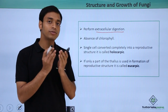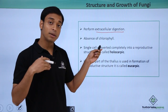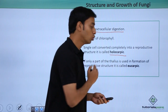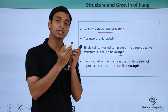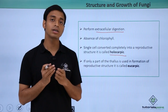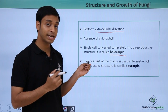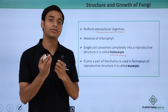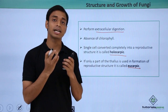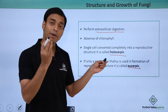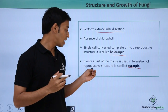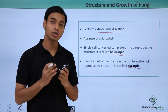If the entire body of a single-cell fungus gets converted into a reproductive structure, it is termed holocarpic. However, if only a part of the fungus is converted into a reproductive structure, that part is known as the eukarpic type — meaning a small part of the thallus or body of the fungus is converted into a reproductive structure.